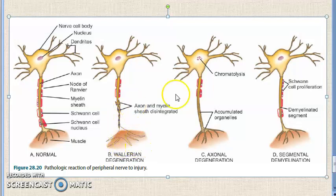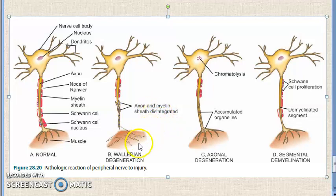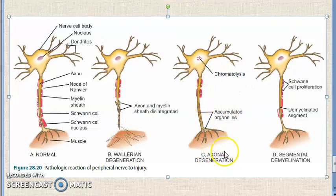After phagocytosis, regeneration occurs by sprouting of axons and proliferation of Schwann cells from the proximal end. So some regeneration can happen from the proximal end itself.